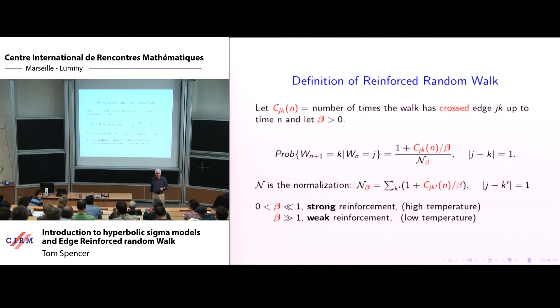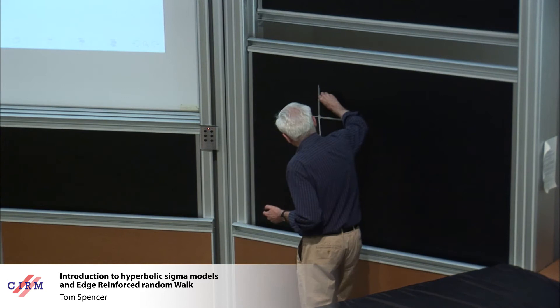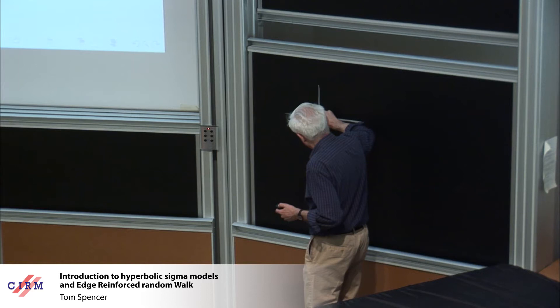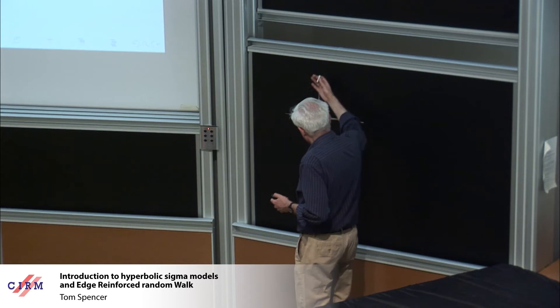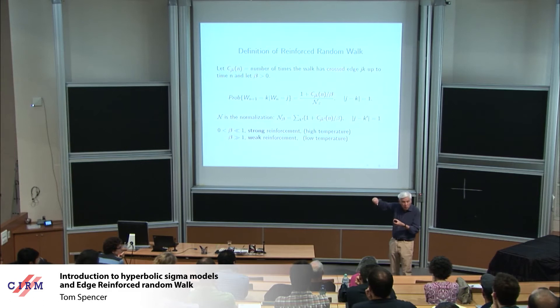Before I go on, are there any questions about the definition? There is a kind of drift in this walk. If your walk starts over here somewhere and explores a vertex for the first time, the new neighboring edges have less weight than the edge you came from. So you're a little bit more likely to choose the edge you've already visited, and there's a drift back toward the origin. If you start at the origin and move out, you're more likely to favor where you were before rather than explore new territory.